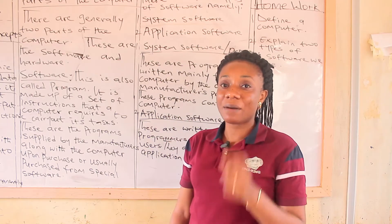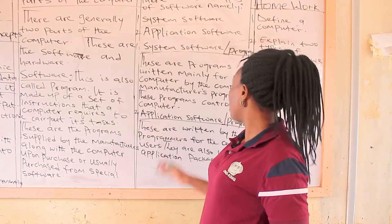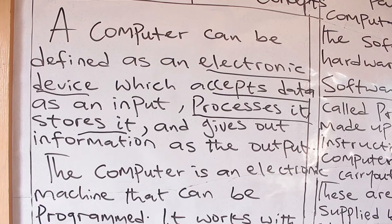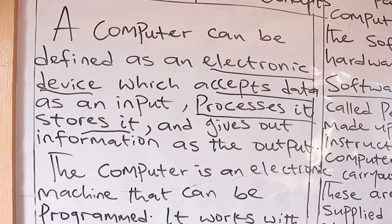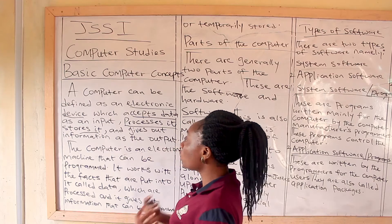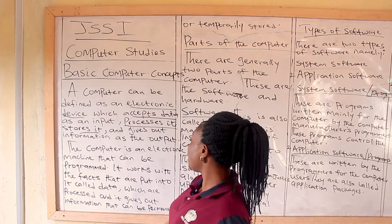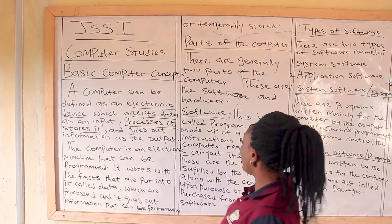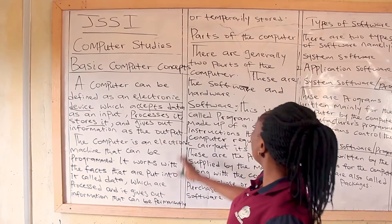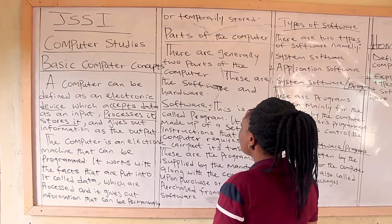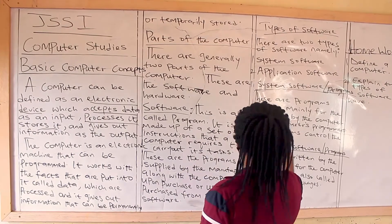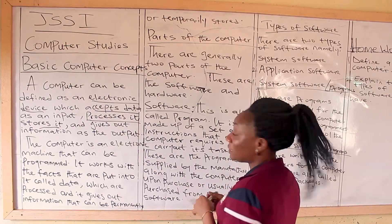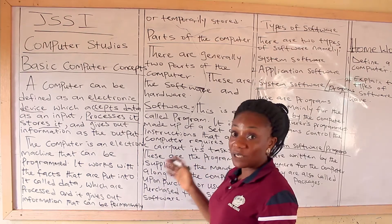Going back to where we started: a computer is an electronic device or machine which accepts data as input, processes the data, and stores it or saves it to give out information as the output. The computer is also an electronic machine that can be programmed, and information is stored permanently or temporarily. The parts of the computer are the software and the hardware, and today we looked at the software, which is divided into system software and application software.